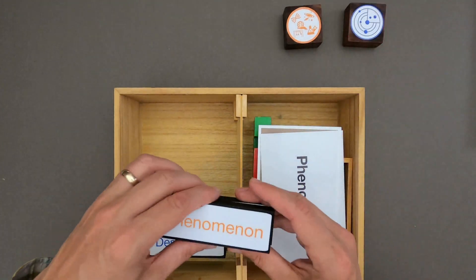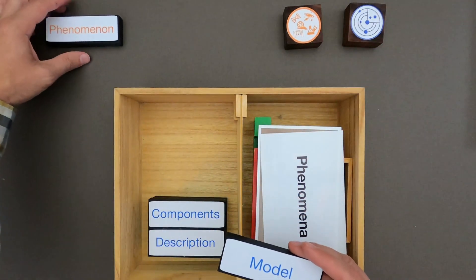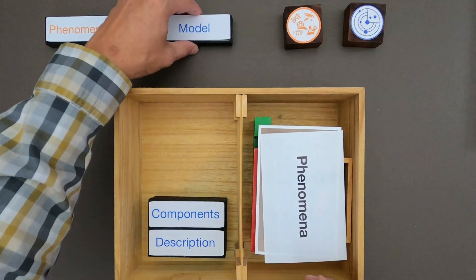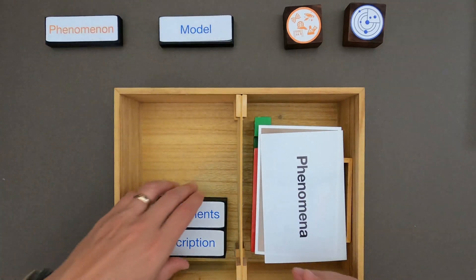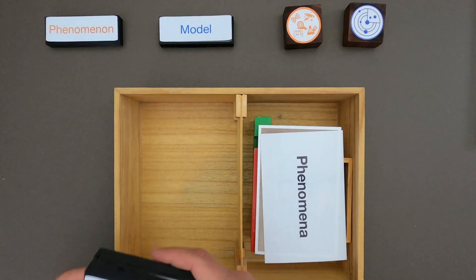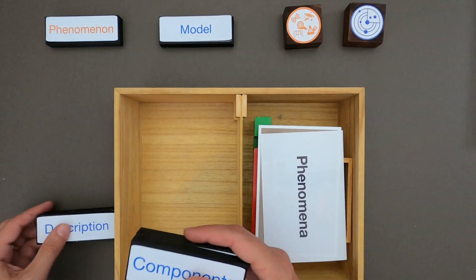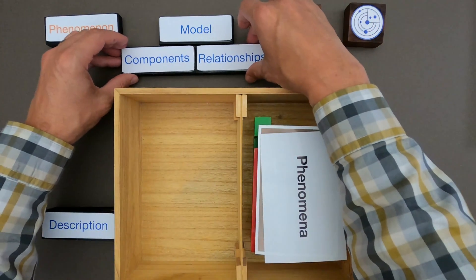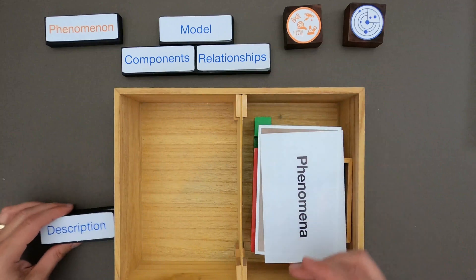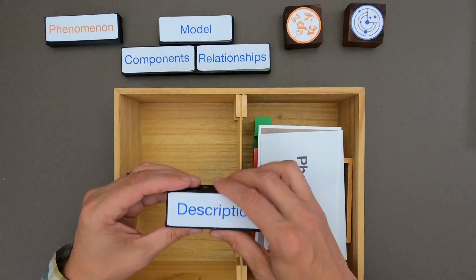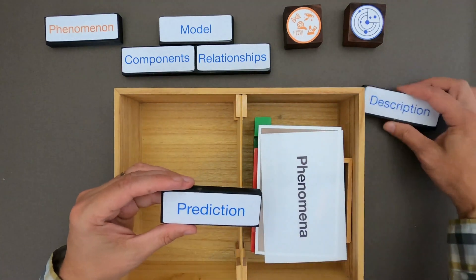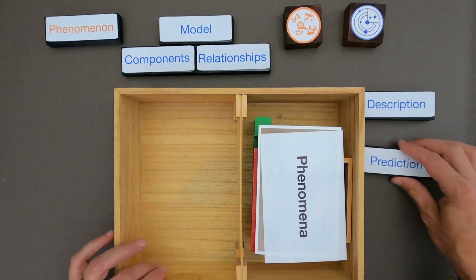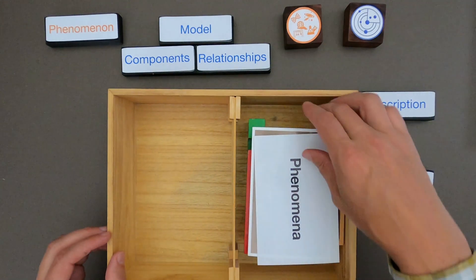Whenever you're developing a model you first want to identify what is the phenomenon that you're trying to explain, and then you develop a model. A model is going to have two big parts: the components and the relationships. Once we have a model we're going to use it to describe the model, but most importantly we're going to use it to make some predictions.